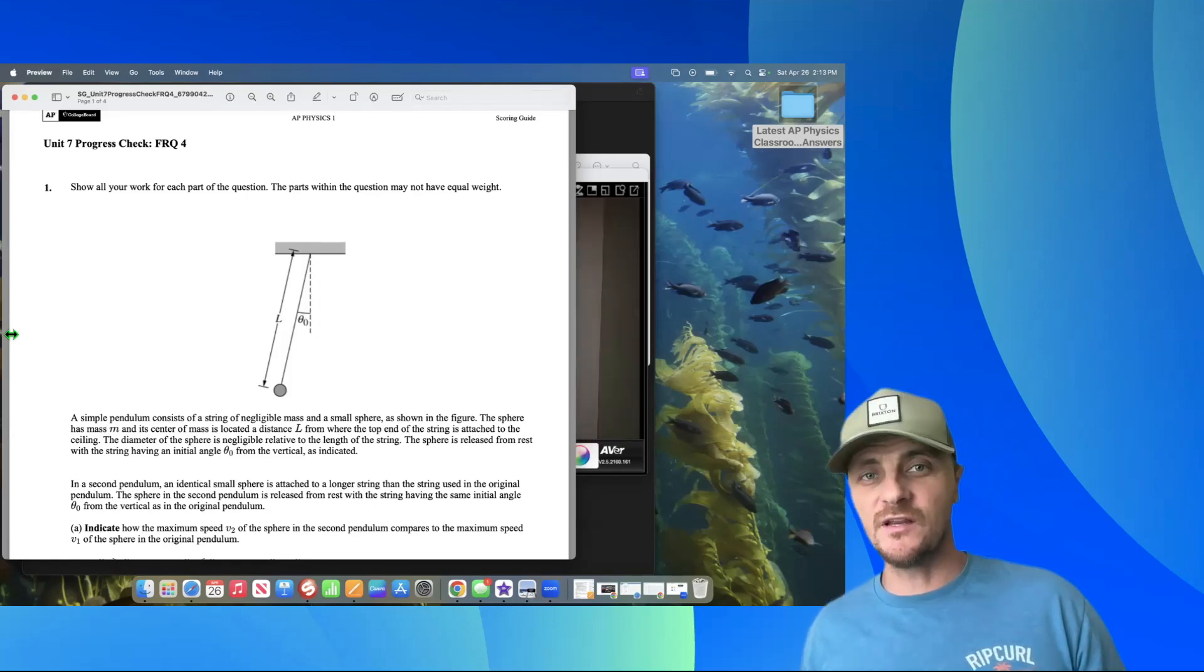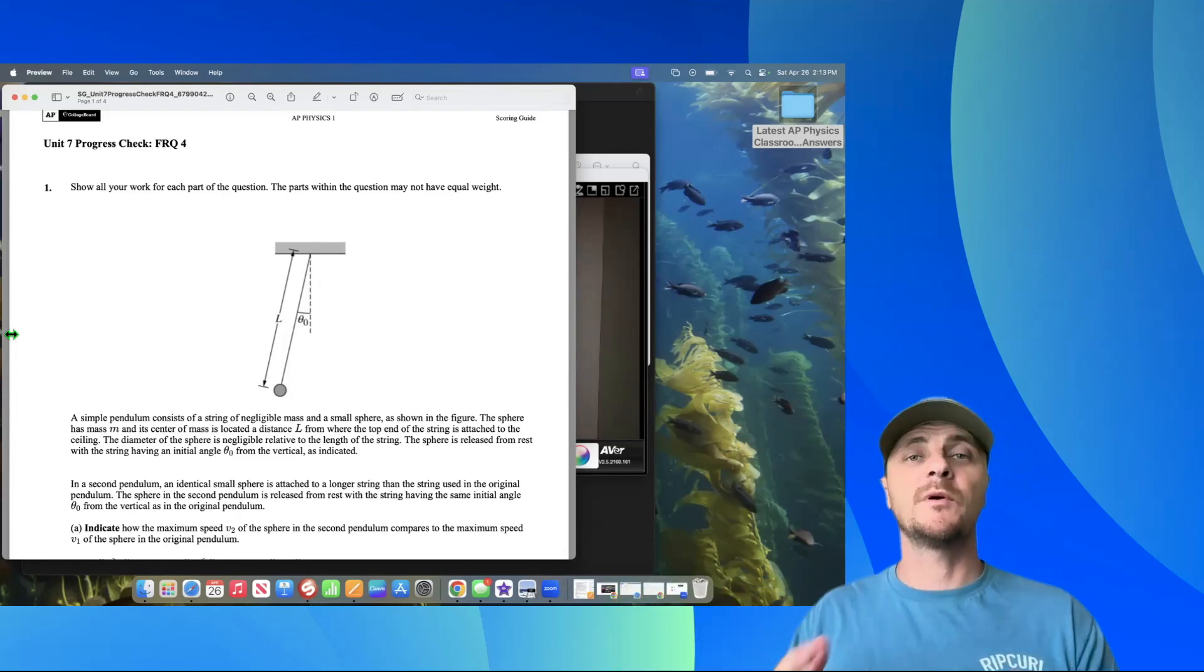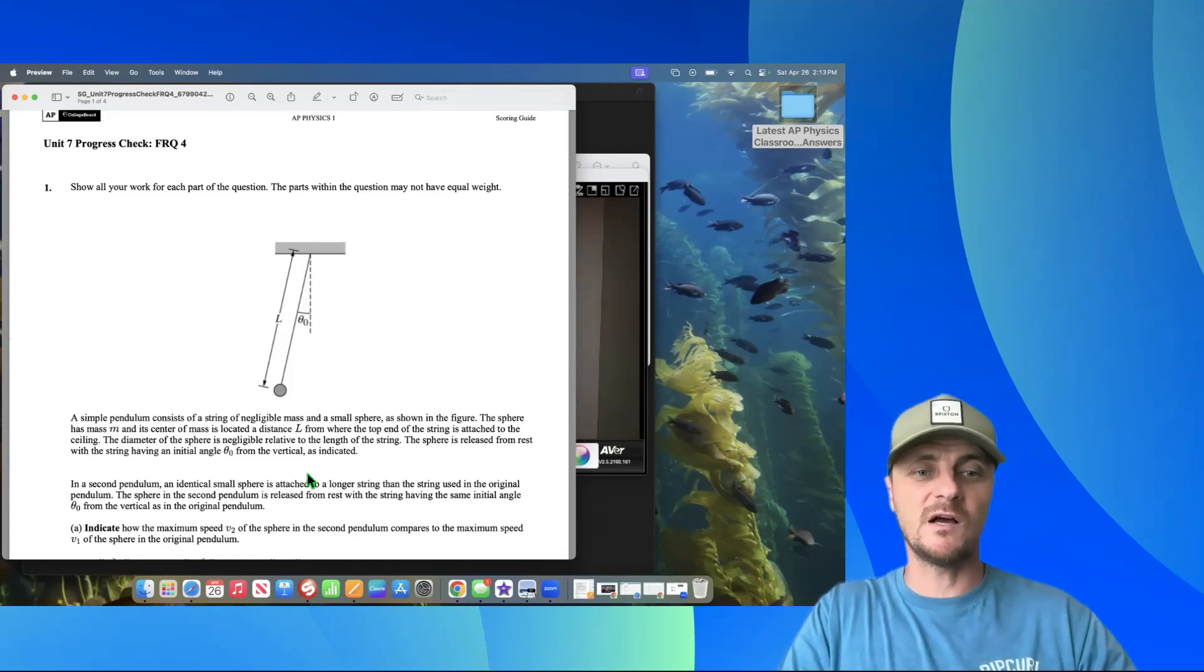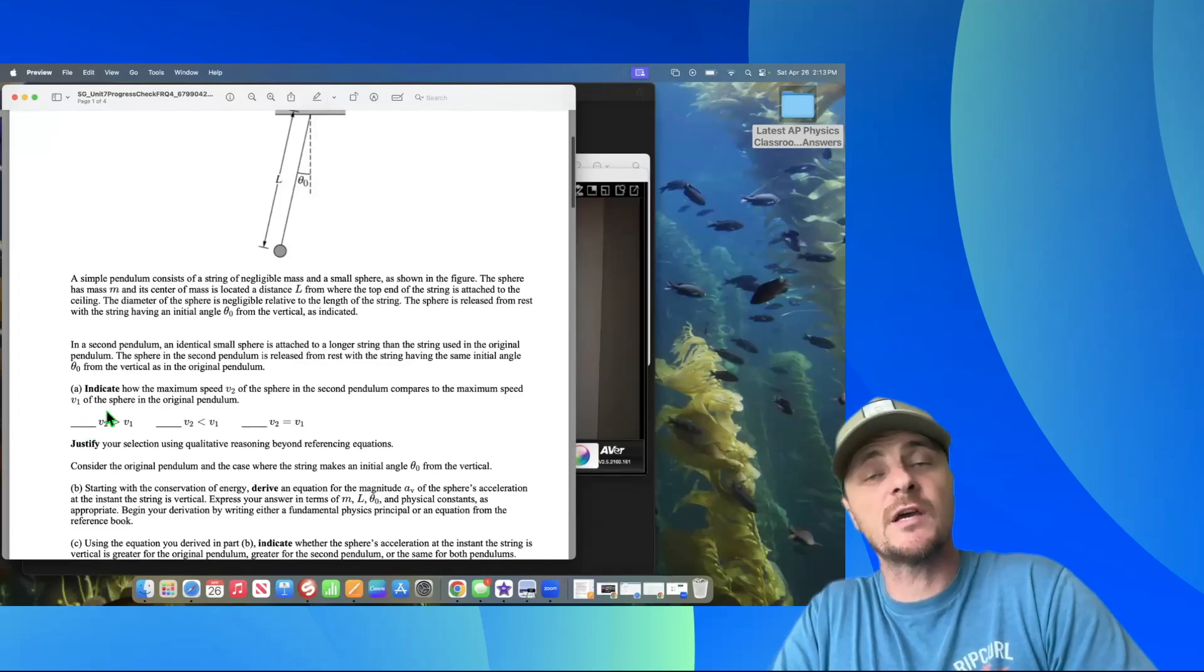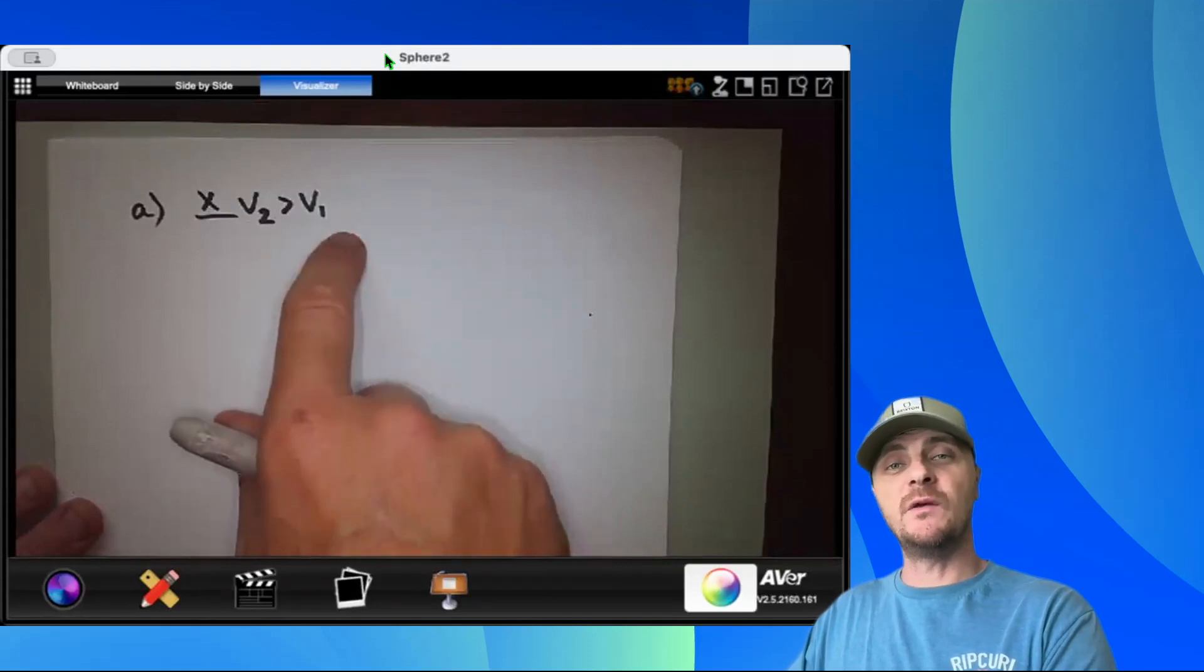So just to keep things straight, the first pendulum has a length l and the second pendulum has a longer length string. But the sphere is exactly the same size and the angle of release is exactly the same angle. So let's get into which one of these velocities is bigger. Well, I know it's v2 is greater than v1, so we're going to check that box. All right, we've selected the correct answer, v2 is greater than v1.